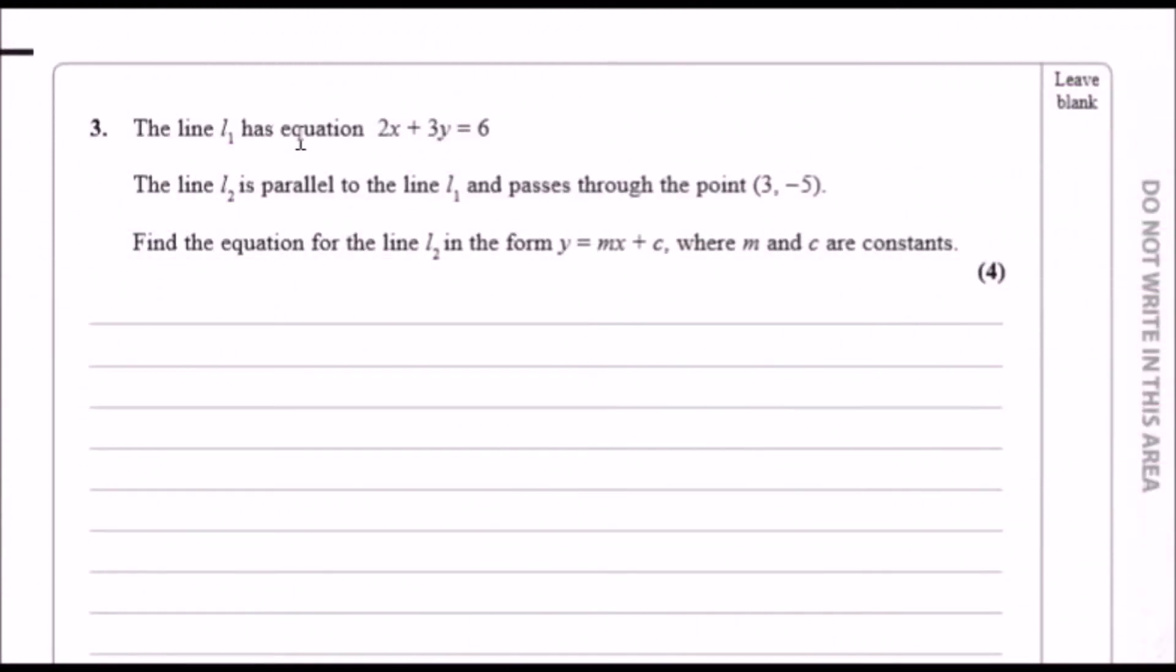The line l1 has the following linear equation, and the line l2 is parallel to the line l1 and passes through this point. Find the equation for line l2 in the given form y equals mx plus c.